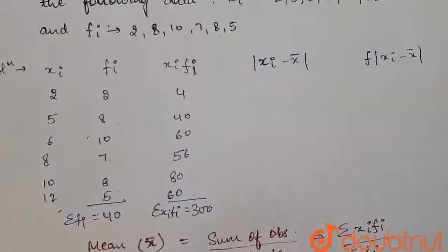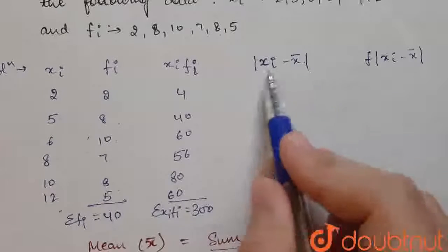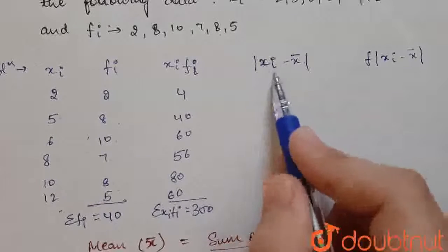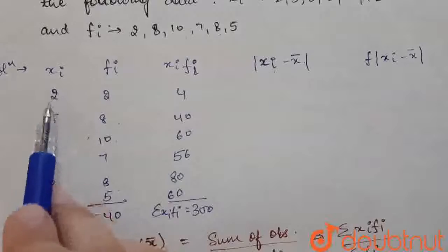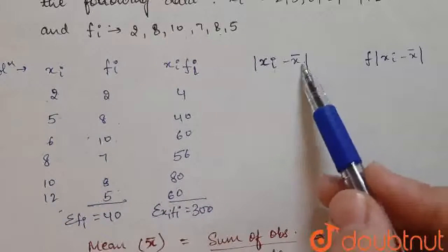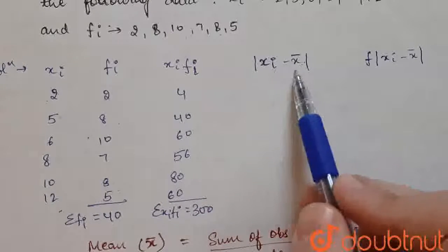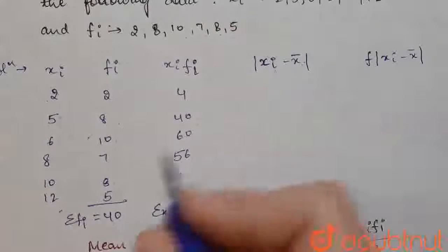Now, what we are going to do? We are going to calculate xi where xi is the term, this term and x bar is mean. So, we will calculate the difference, the mod of the difference.